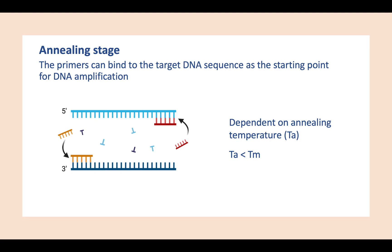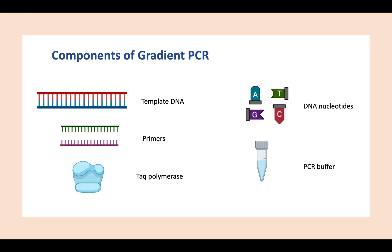If the annealing temperature is too high, then the primer cannot bind properly to the template DNA. However, if the annealing temperature is too low, then it allows for more non-specific amplification. Any kind of non-specific binding can be a problem in our PCR reaction.